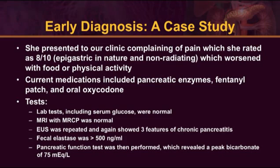I also performed a fecal elastase, which was in the normal range — greater than 500 — and ultimately put her through a formal pancreatic function test, which was abnormal, but slightly abnormal, with a peak bicarbonate of 75 milliequivalents per liter. This is an unusual patient if you were to read a textbook describing the typical patient with chronic pancreatitis, where you would see a patient with end-stage disease — an atrophic and calcified gland with intractable pain. This person has pain, but doesn't have a lot of these other features of end-stage disease.